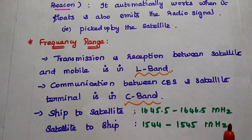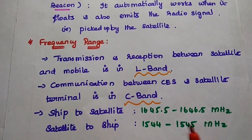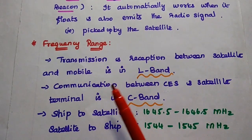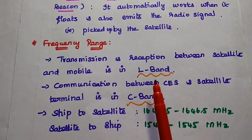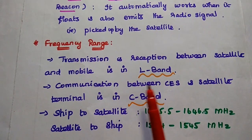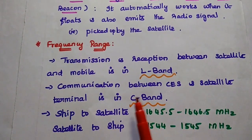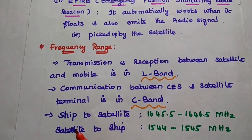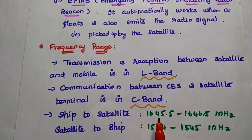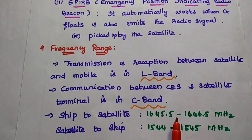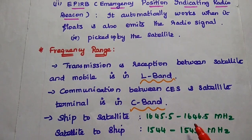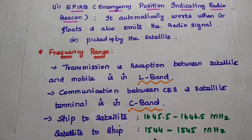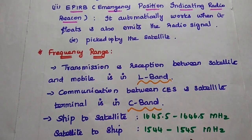The frequency ranges used in Inmarsat applications are as follows. Transmission and reception between the satellite and mobile terminals — that is, satellite phones — is in the L-band range. Communication between the Coastal Earth Station and the satellite terminal is in the C-band range. For ship-to-satellite communication, the frequency range is 1645.5 to 1646.5 MHz, and for satellite-to-ship it is 1544 to 1545 MHz.